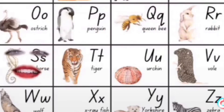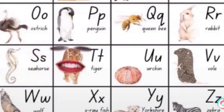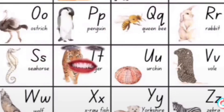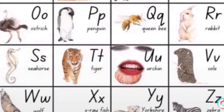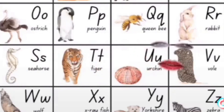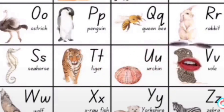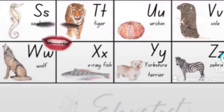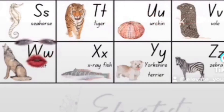S, S, Seahorse. T, T, Tiger. U, U, Urchin. V, V, Vole. W, W, Wolf.